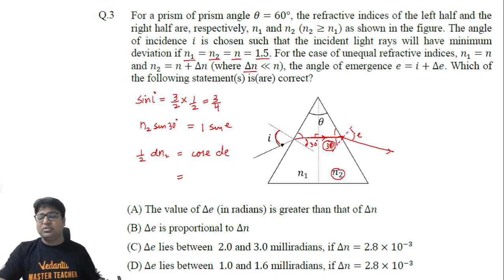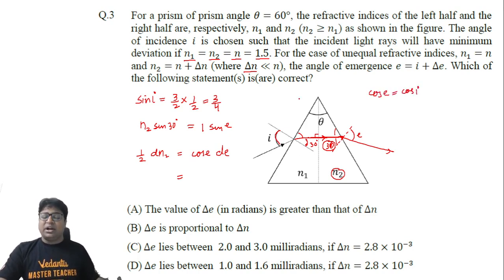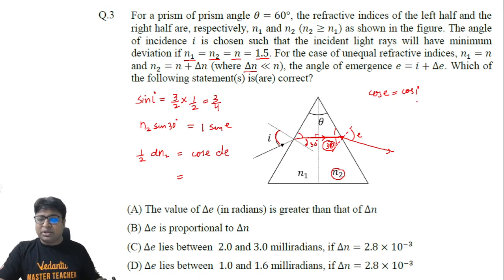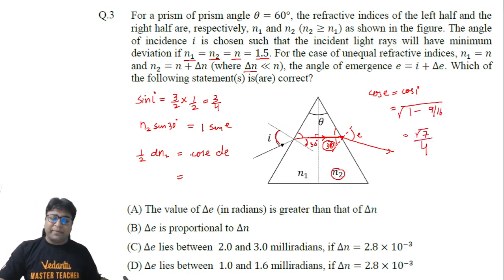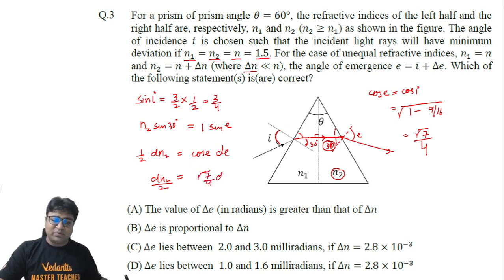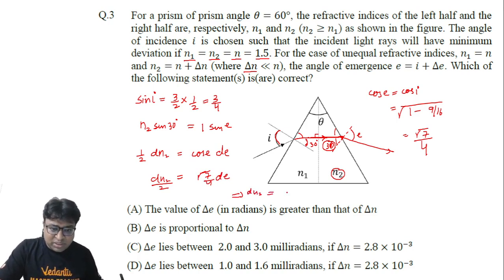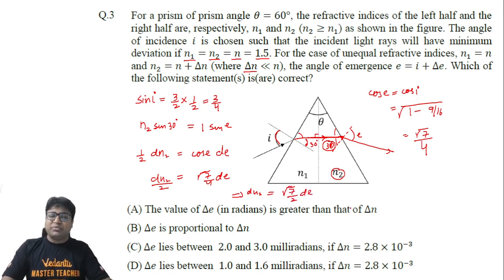The value of cos e right now is the same as cos i, because under minimum deviation conditions e equals i. So cos e = √(1 − sin²i) = √(1 − 9/16) = √(7/16) = √7/4. Substituting back: dn2/2 = (√7/4) × de, which gives dn2 = (√7/2) × de.